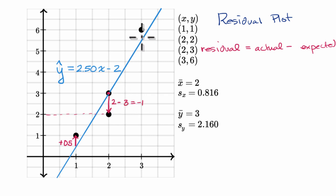And then over here, our residual, our actual when x equals three is six. Our expected when x equals three is 5.5. So six minus 5.5, that is a positive 0.5.